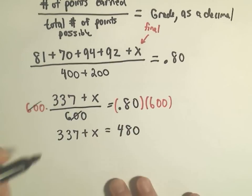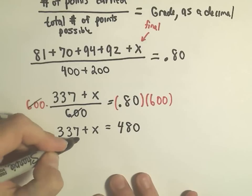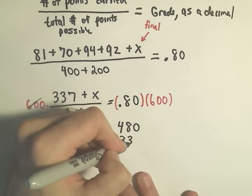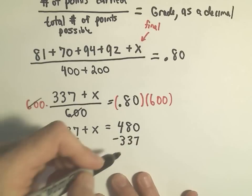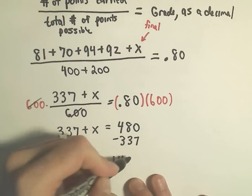Okay, so .80 times 600, that would be 480. Okay, and now we're simply going to subtract 337 from both sides. Okay, so 480 minus 337, that is 143.